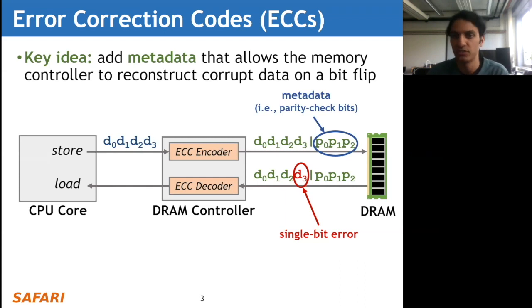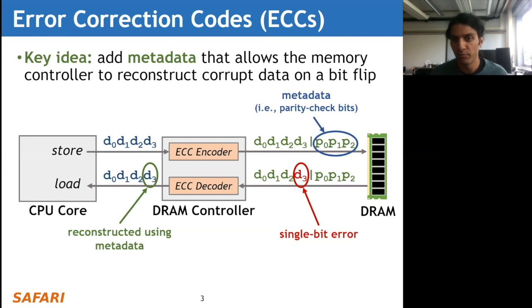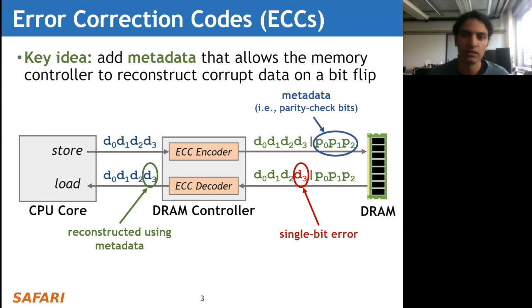When the CPU core performs a load operation, the memory controller reads all seven bits from the DRAM. If we have a single bit error - say bit d3 has a bit flip - when this reaches the DRAM controller, the ECC decoder will look at this and try to reconstruct the true value of d3 based on the additional metadata appended to the regular data. In this case it's a single bit error and this is a single error correcting code, so the DRAM controller is able to reconstruct bit d3 and send the correct data back to the CPU core. Typically, having more metadata or fancier logic within the ECC encoder and decoder allows us to correct even more errors.